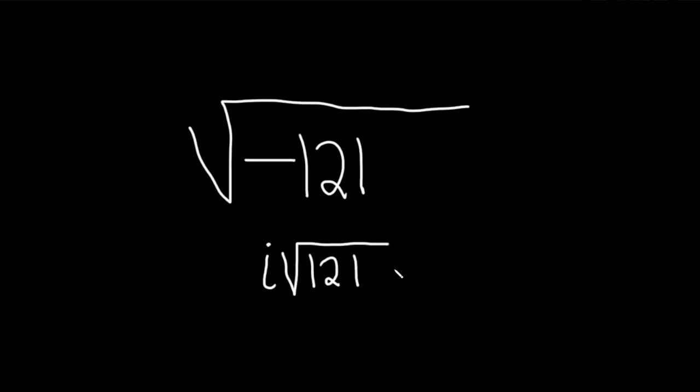Now the square root of 121 is 11. So this is equal to i times 11. But nobody really leaves their answer like this. People usually write the i at the end. So let's go ahead and write this as 11 times i.